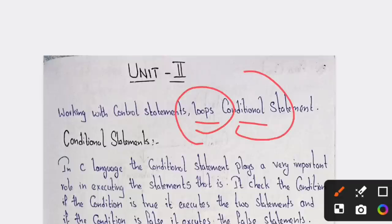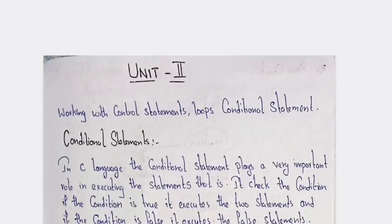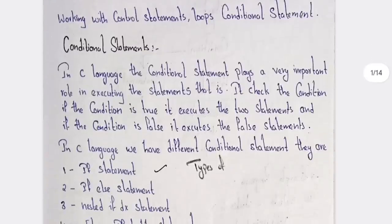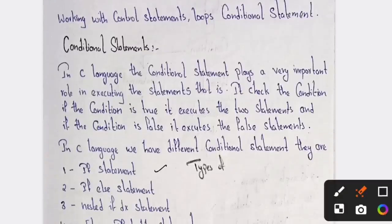Out of these two statements, looping and conditional, compulsory one question you will get in Part B. First we will discuss conditional statement. What is a conditional statement? It uses any condition — it checks the condition if it is true or false. In C language the conditional statement plays a very important role in executing statements.